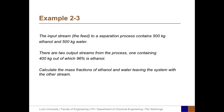Let's go to the next example, Example 2.3. The input stream, the feed to a separation process, contains 500 kg of ethanol and 500 kg of water. There are two output streams from the process, one containing 400 kg total, of which 96% is ethanol. Calculate the mass fractions of ethanol and water leaving the system with the other stream.